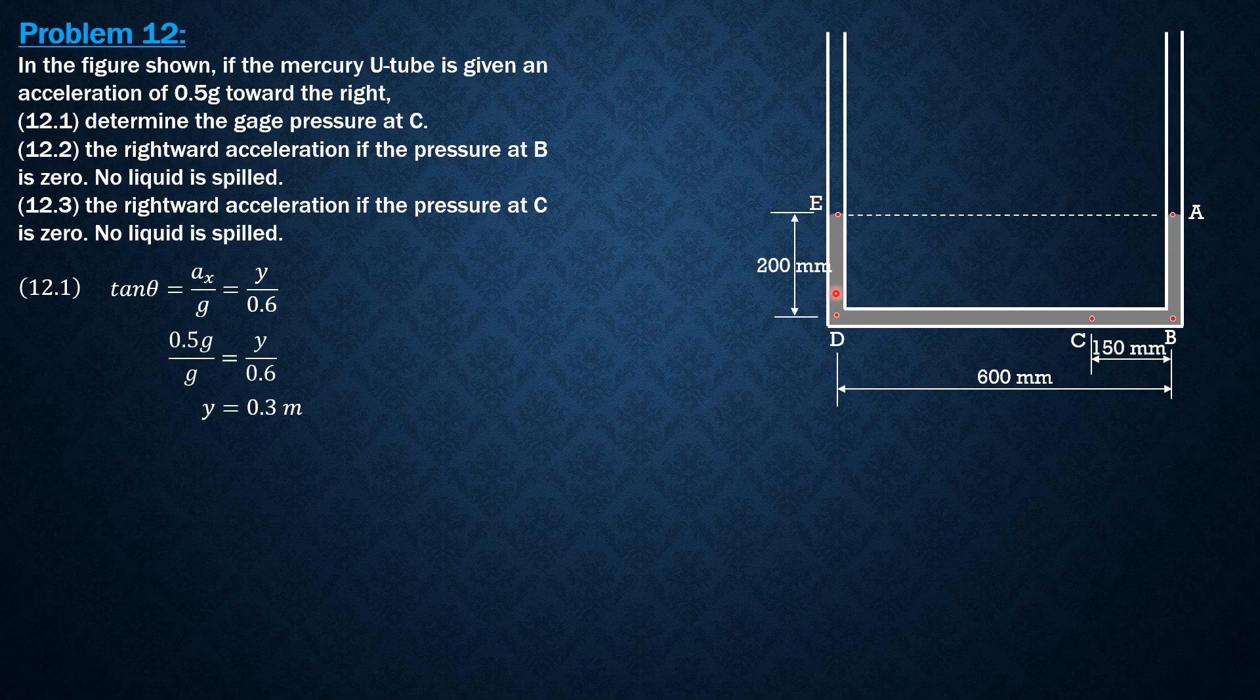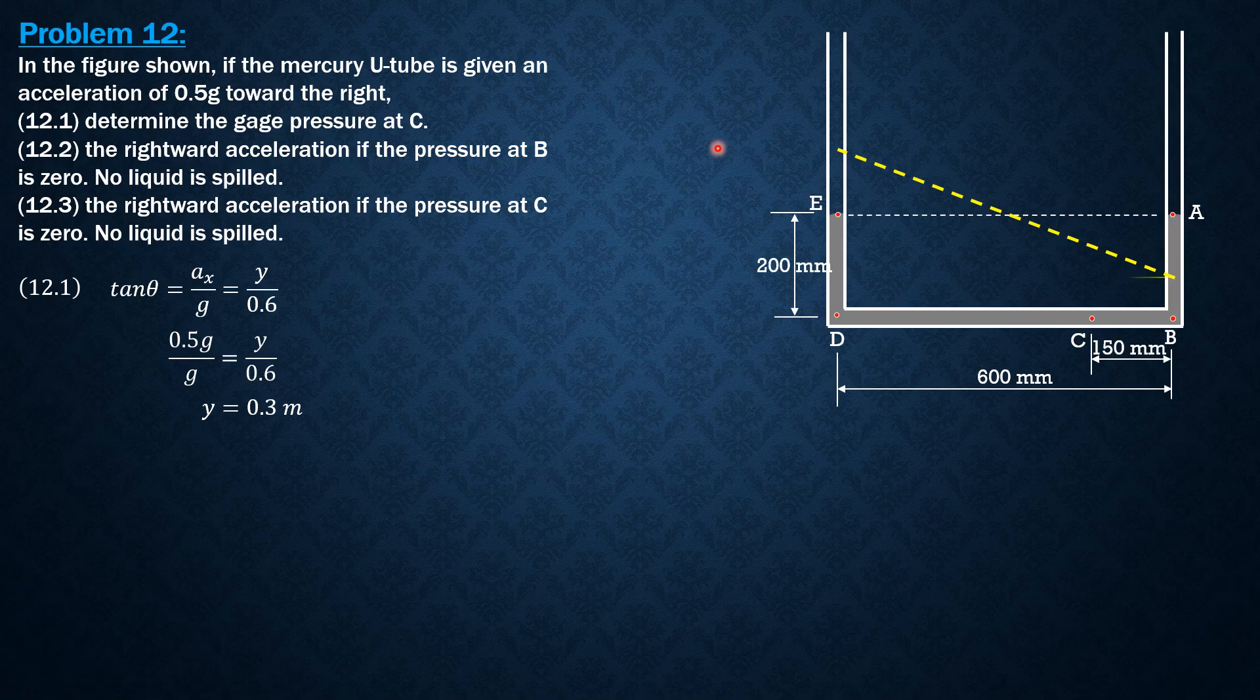Because Y is 0.3 and if we have 0.2 meter or 200 mm, that's more than 0.3, meaning this mercury surface will lower by 0.15 and at E it will rise by 0.15 to make it 0.3. This should be the imaginary surface of 0.3. Y is 0.3.